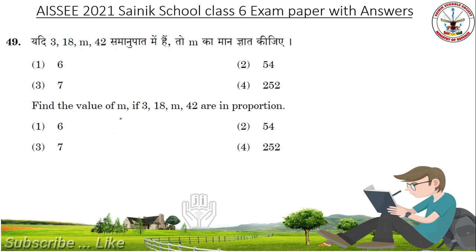49th question: Find the value of M if 3, 18, M, 42 are in proportion. Answer is 7.